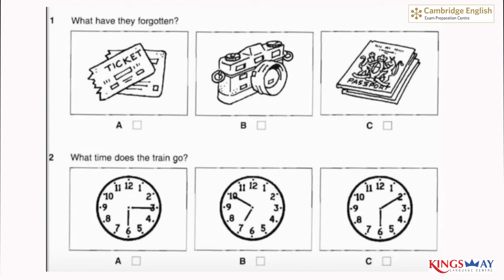Two. What time does the train go? Hurry up, we'll be late. What time does the train go? At 6.15. We've got to leave in ten minutes. I'm nearly ready. Now listen again. Hurry up, we'll be late. What time does the train go? At 6.15. We've got to leave in ten minutes. I'm nearly ready.